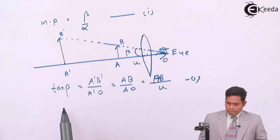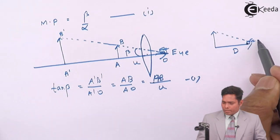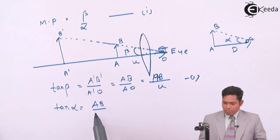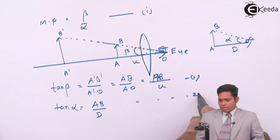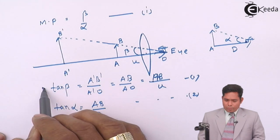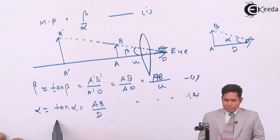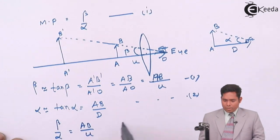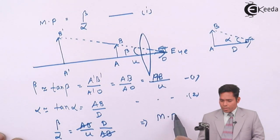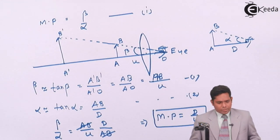If the object is kept at the least distance of distinct vision D, the angle subtended at the eye is alpha, so tan alpha equals AB divided by D. This is equation number two. From these two equations, tan beta divided by tan alpha — and for very small angles, this approximates to beta/alpha — equals (AB/u) divided by (AB/D). AB cancels out, giving magnifying power M = D/u. This is the magnifying power of a simple microscope.